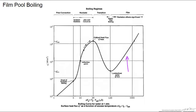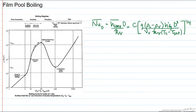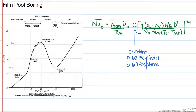We're going to use correlations that are similar to those of film condensation. For example, the Nusselt number, which allows us to find the convective heat transfer coefficient, can be determined using the following correlation. The constant c is equal to 0.62 if you have a cylinder, and 0.67 if you're looking at a sphere.